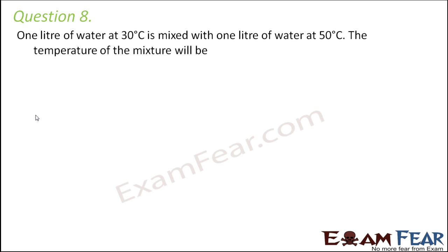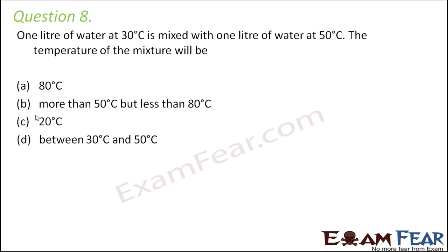Question number 8. One liter of water at 30 degrees Celsius is mixed with one liter of water at 50 degrees Celsius. The temperature of the mixture will be - you have four options.